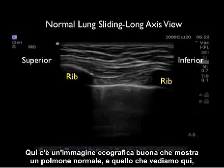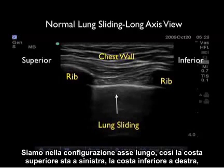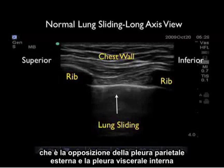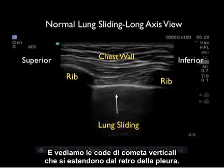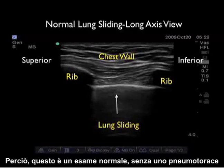Here's a nice ultrasound image showing a normal lung. We're in the long axis configuration, so the superior rib is to the left, inferior rib to the right, chest wall anteriorly. We see here the lung sliding, which is the opposition of the outer parietal and the inner visceral pleura. And we see the vertical comet tails coming off the back of the pleura. Thus, this is a completely normal exam — no pneumothorax.